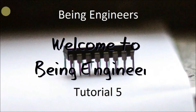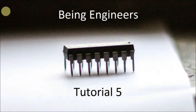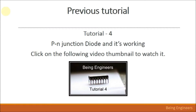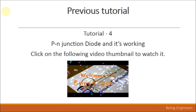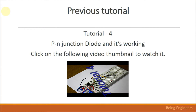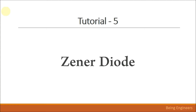Hello guys, welcome to Bing Engineers. This is the fifth tutorial in the basic electronic component playlist. In the previous tutorial, tutorial 4, we learned about the PN junction diode and its working. Now let's go into tutorial 5, which is about the xenon diode. The xenon diode is also a kind of PN junction diode, but it differs in certain ways.